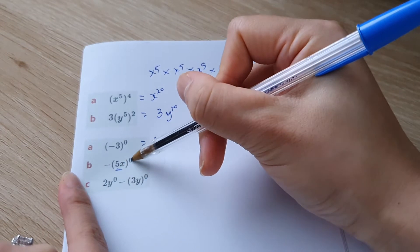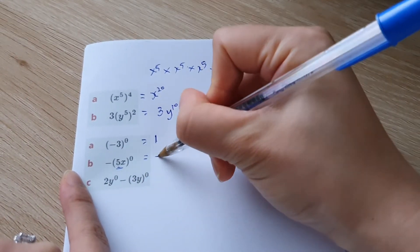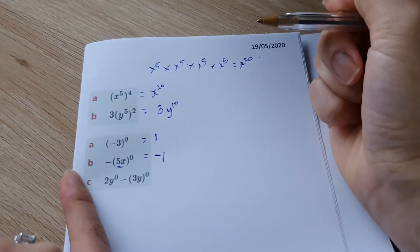Now, everything in the bracket raised to the power of zero is going to give us one. But there's a negative on the outside that's unaffected. So that negative is still there and that's going to be negative one.